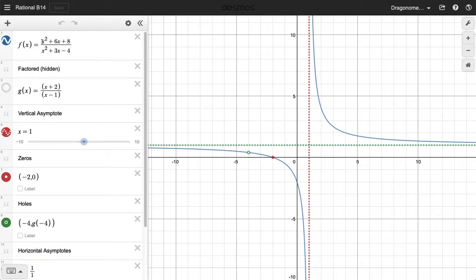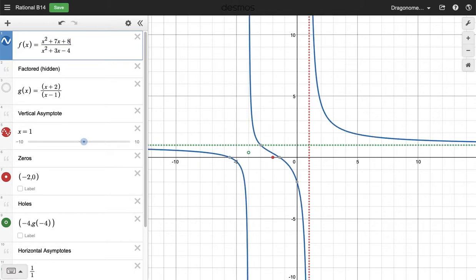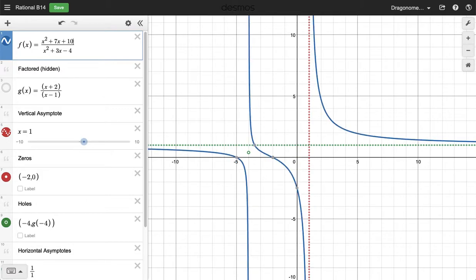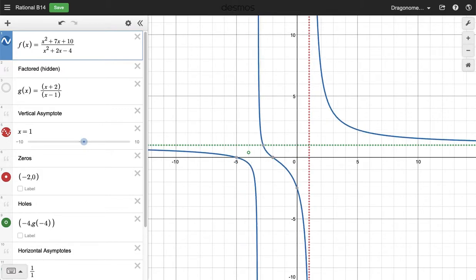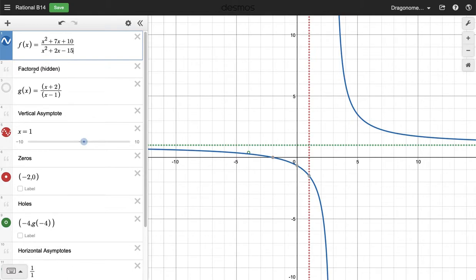Now what I want to do is I want to go through and put the information in for number 14 from the assignment. The original function was x squared plus 7x plus 10. Your graph will change. Don't pay attention to that right now. The other one was x squared plus 2x minus 15.